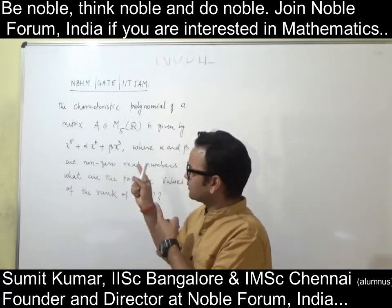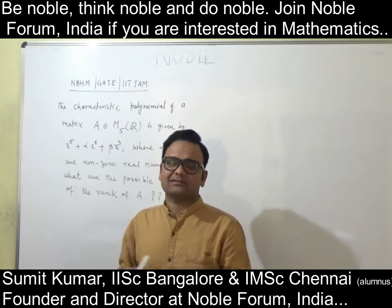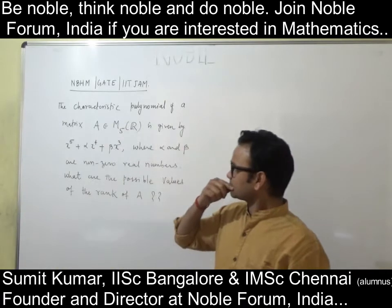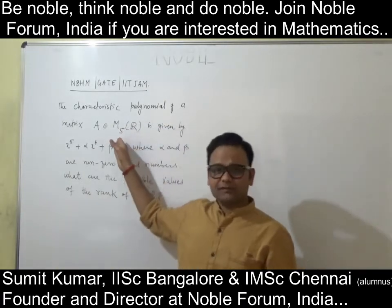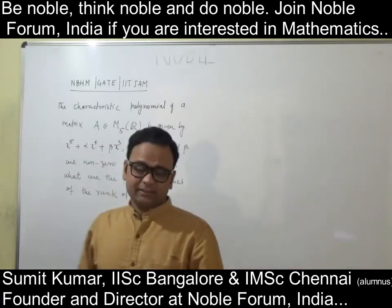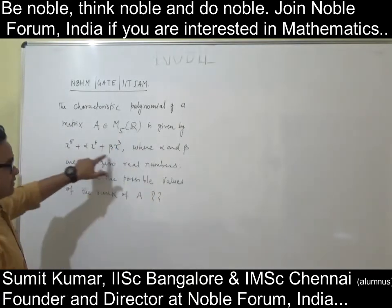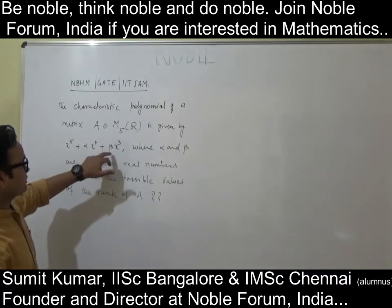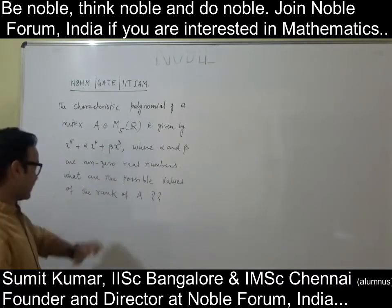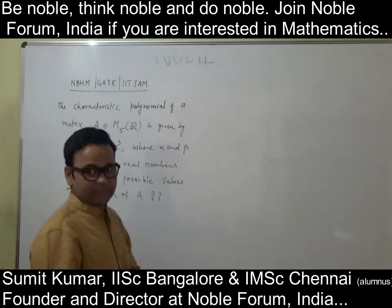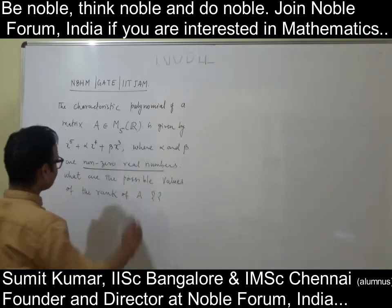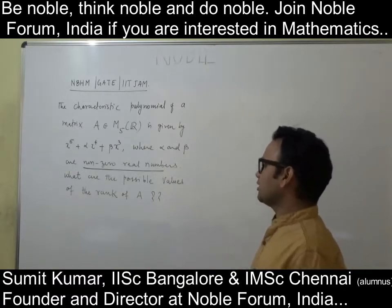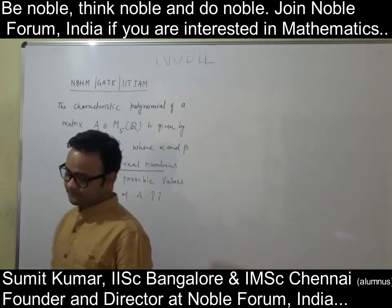This question was asked in the NGHM exam in 2017. A is a 5×5 real matrix, and the characteristic polynomial of this matrix is exactly given as x⁵ + αx⁴ + βx³, where α and β are non-zero real numbers. This is very, very important. They are asking: what are the possible values of the rank of A?